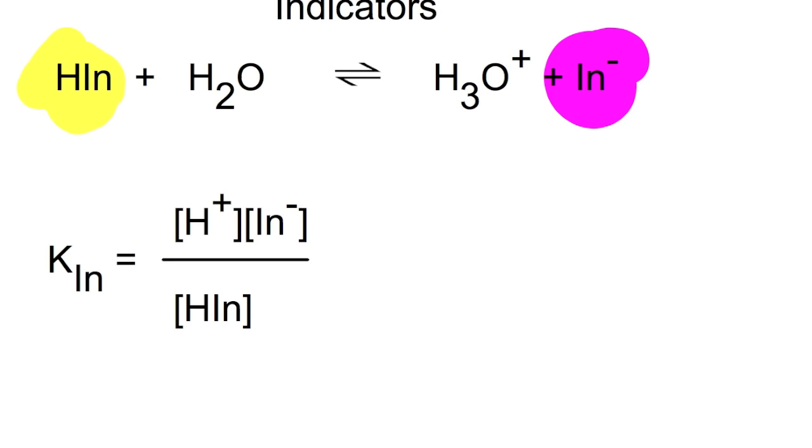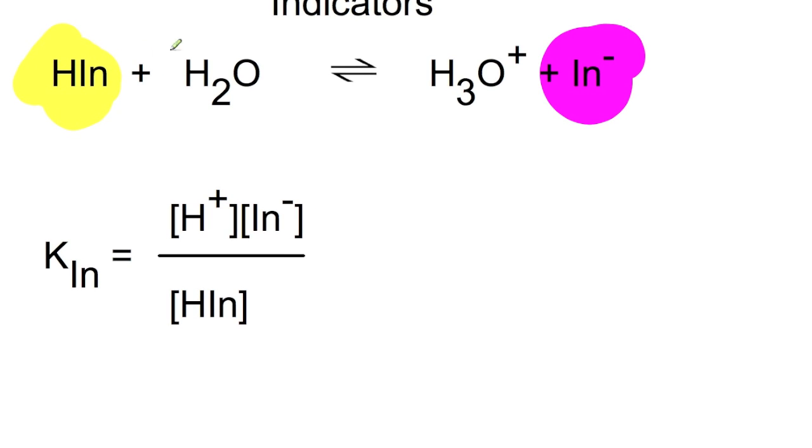For an indicator to be useful, it really needs to have a very clear color difference between the acid and its conjugate base.